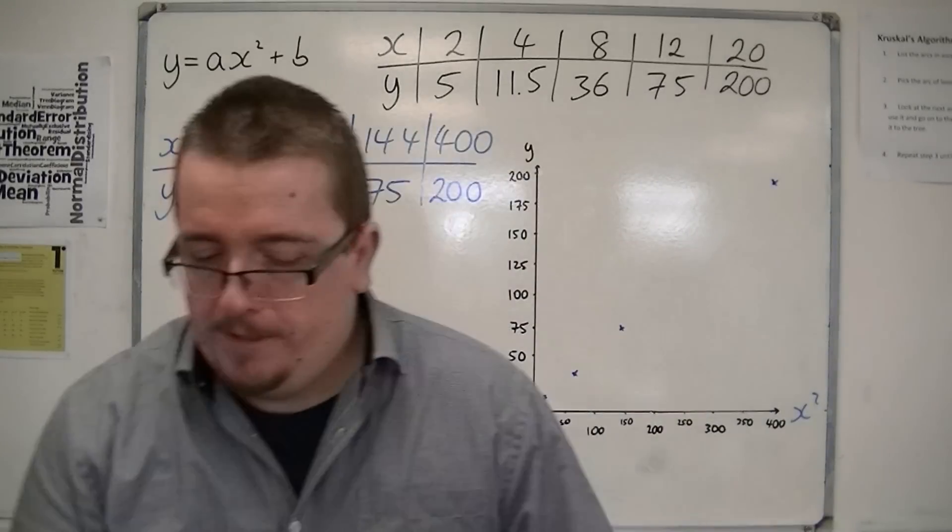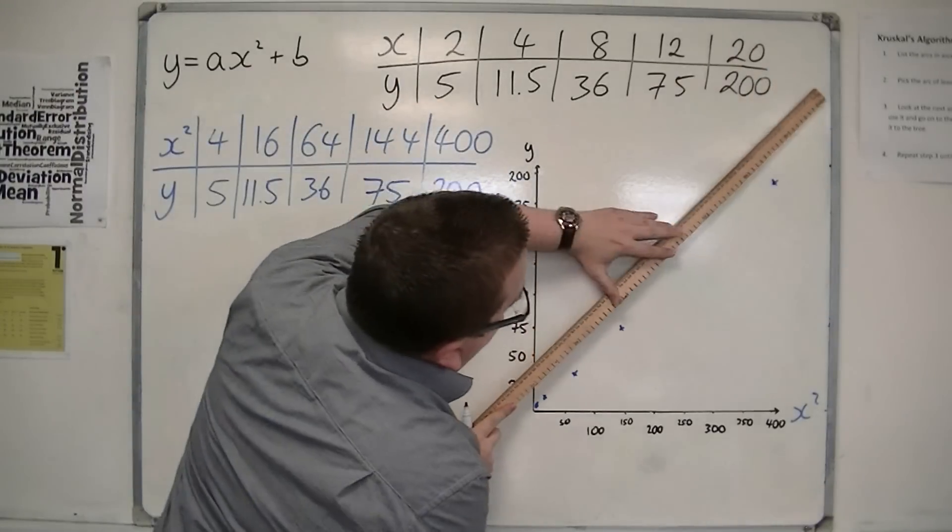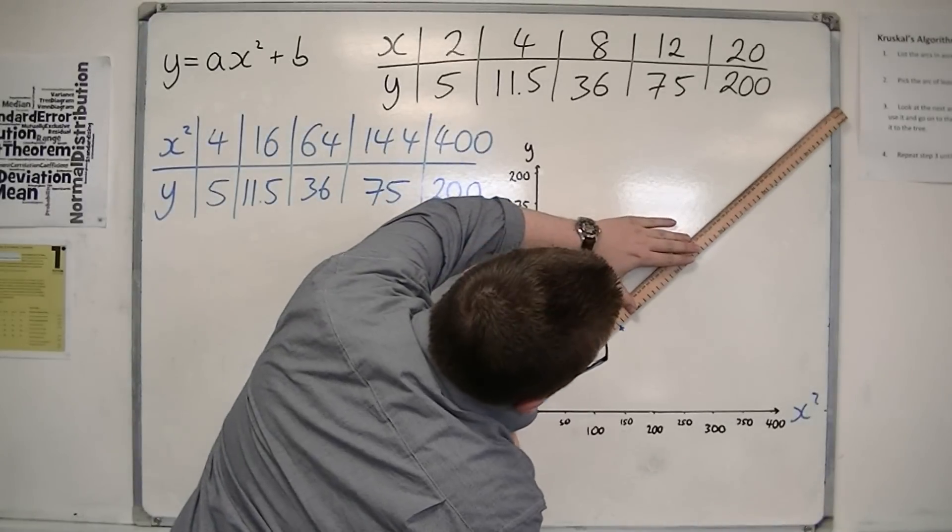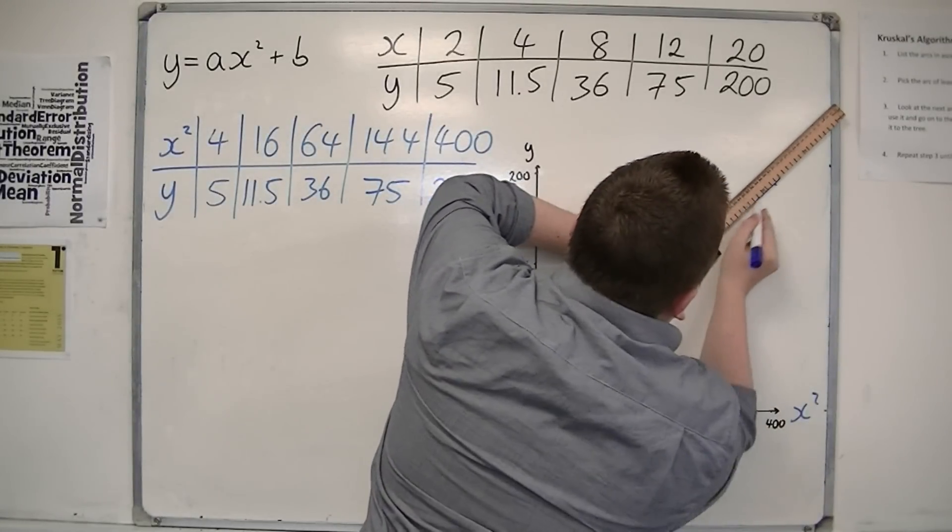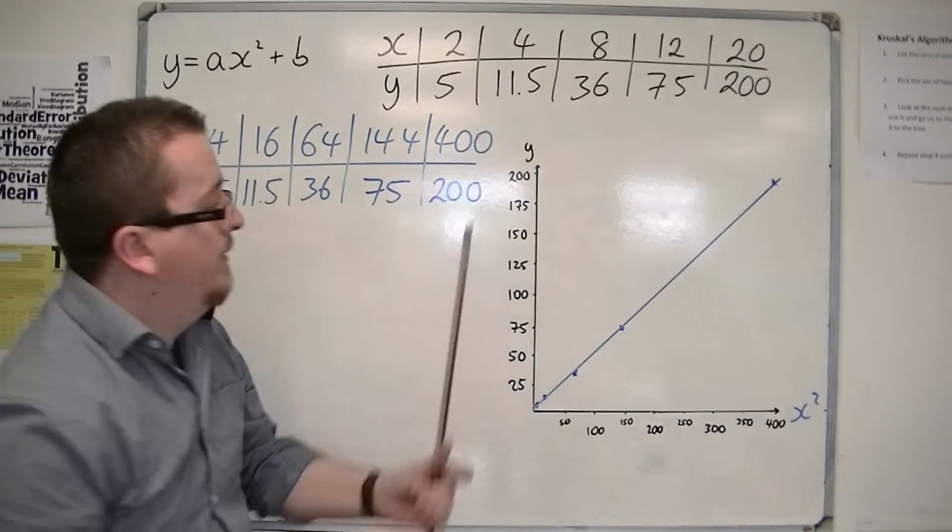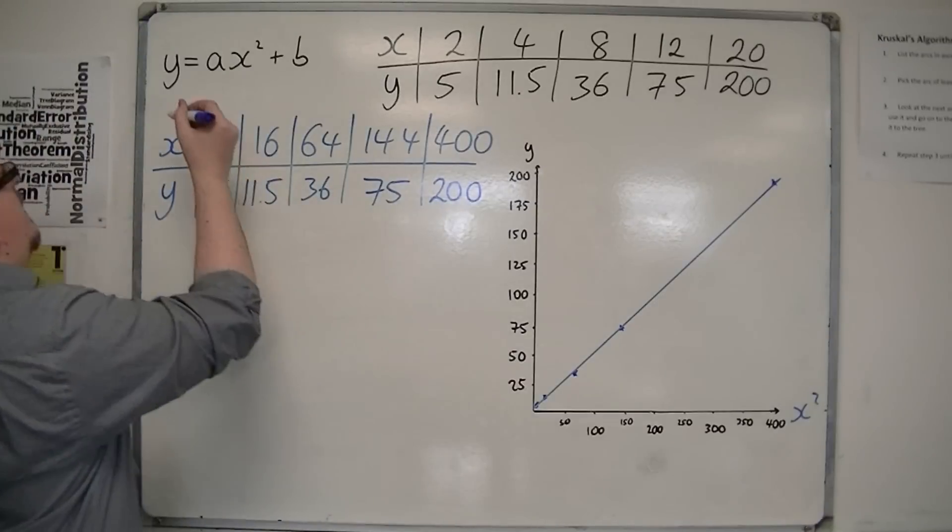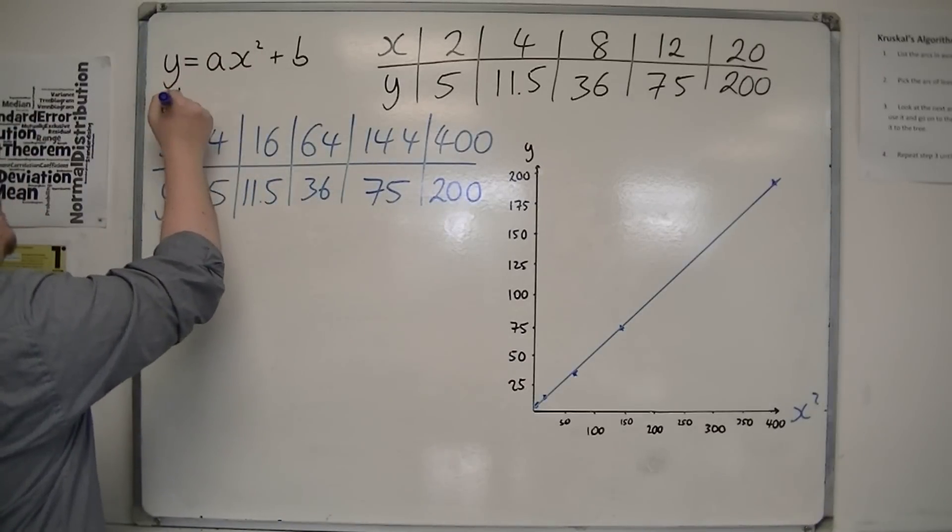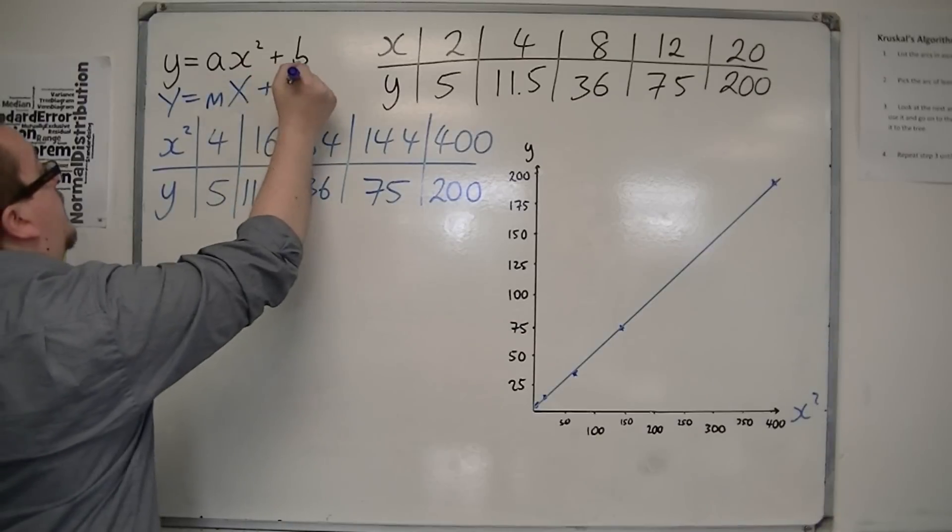And what we find is that if the points that we've plotted go in a straight line, then our original idea is probably correct. That it will fit y equals ax squared plus b, because they are in a nice straight line, where this is very similar to being Y equals mx plus c.